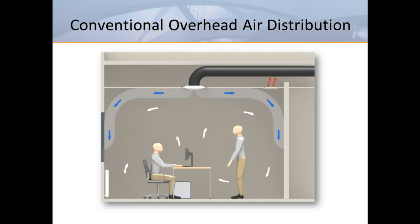We should start by explaining the difference between conventional overhead systems and displacement ventilation. Conventional overhead systems provide comfort through room air mixing — for this reason, these systems are also known as fully mixed systems. In typical cooling applications, 55-degree air is supplied from ceiling diffusers or high sidewall grills. The induction created by the outlet discharge jet results in room air motion, with secondary air motion due to the entrainment of room air into the supply jet where mixing occurs. Ideally, an overhead system results in fully mixed air throughout the occupied zone with minimal temperature stratification.